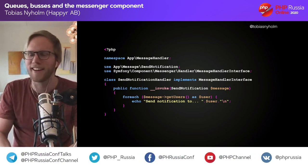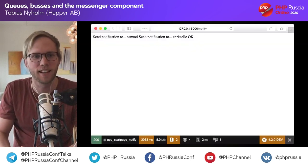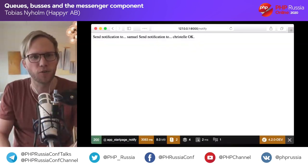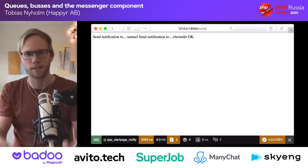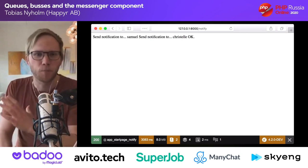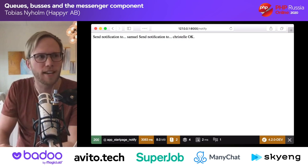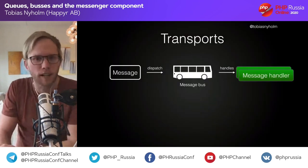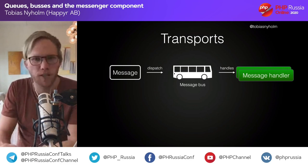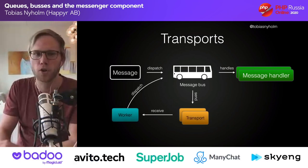If I execute the controller now, we actually send our notifications. But what if the notification takes a long time to send — like 30 seconds each? I don't want the user to wait. So let's do this asynchronously. To do things asynchronously, we need to introduce a new concept: transports. You take a message, give it to the bus, the bus gives it to the transport, and at some point later a worker receives the message and gives it back to the bus, which finds the correct message handler.